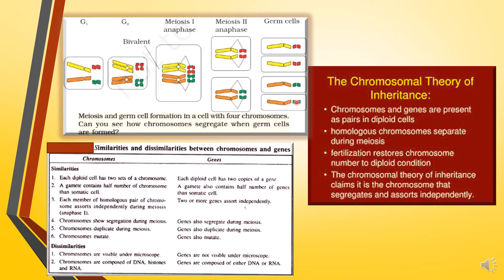A gamete contains half the number of chromosomes compared to somatic cells. In sexual reproduction, gametes from two parents combine — each contributing half — to restore the full number. A gamete also contains half the number of genes compared to somatic cells. Each member of a homologous pair of chromosomes assorts independently during meiosis; they can randomly go with any other chromosome.